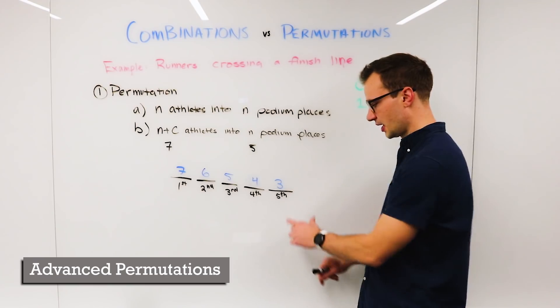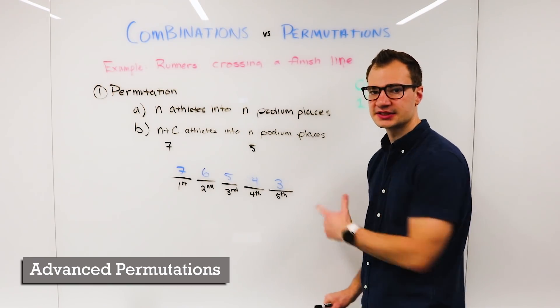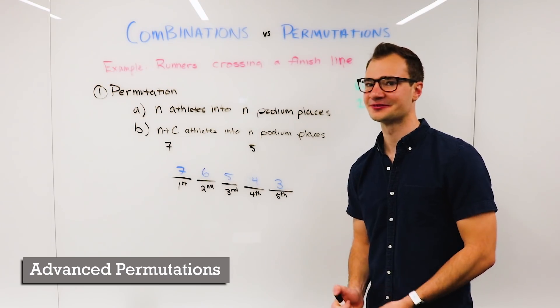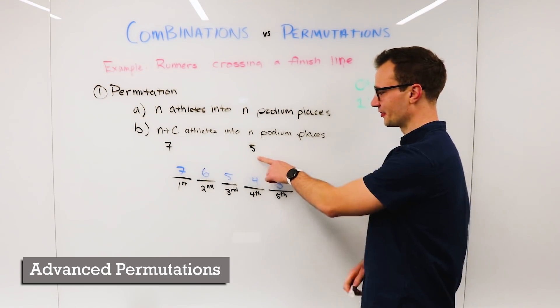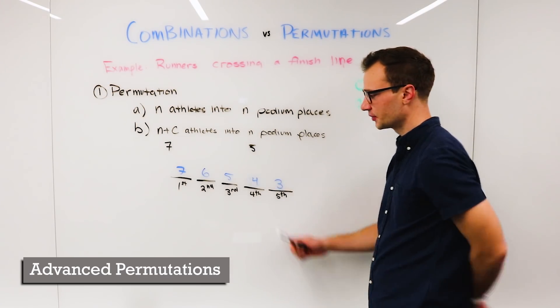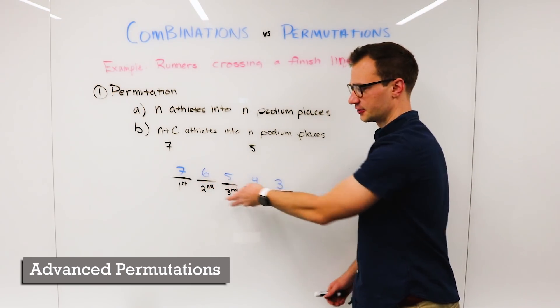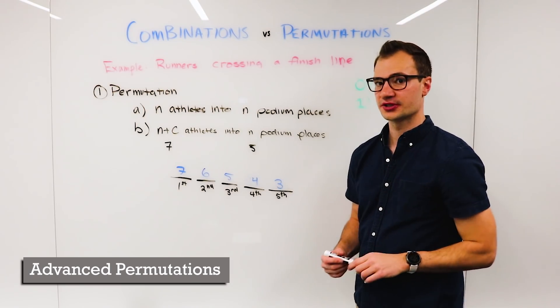Now I'm going to stop right here. I'm not going to write sixth and seventh place even though we have six and seven athletes because we don't care about them, right. We only care about the five podium places. So we need a way to mathematically represent this without having to write out every single number every single time we do this.